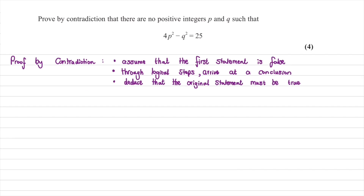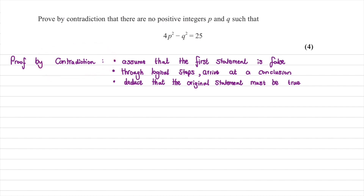We're being asked to prove by contradiction that there are no positive integers P and Q such that 4P squared minus Q squared is equal to 25. So we first think: proof by contradiction. What is proof by contradiction? What does this mean?